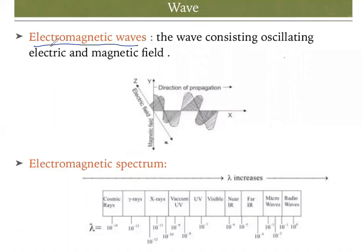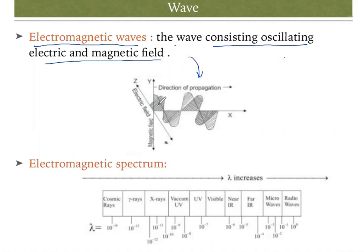Next we'll discuss electromagnetic waves. As the name suggests, these are waves where both electric and magnetic fields are present — consisting of oscillating electric and magnetic fields. In a diagram, the z-axis has the electric field and the y-axis has the magnetic field. Whenever the wave propagates, these two fields propagate perpendicularly to each other — the angle between y and z is 90 degrees. These are known as electromagnetic waves.